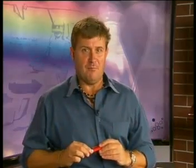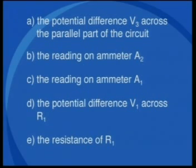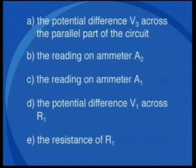Let's try another circuit problem. This one is a bit more difficult, so please pay close attention. Resistor R1 is connected in series with two resistors, R2 and R3, which are in parallel with each other. Find the following: A, the potential difference V3 across the parallel part of the circuit; B, the reading on ammeter A2; C, the reading on ammeter A1; D, the potential difference V1 across R1; and lastly E, the resistance of R1.